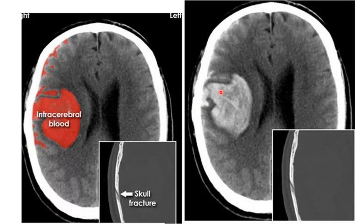There is subarachnoid bleeding in this case. When we apply the bone window and magnify, we can see a fracture here, which most likely injured an artery over the surface of the brain. So there is subarachnoid bleeding in addition to the intraparenchymal hematoma.